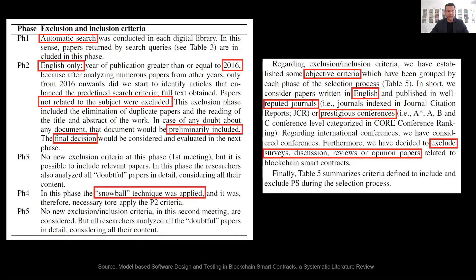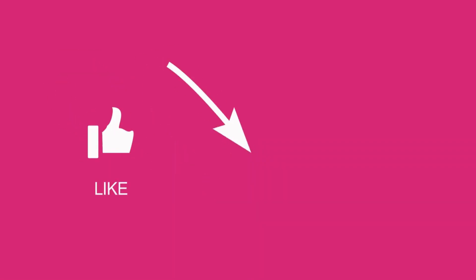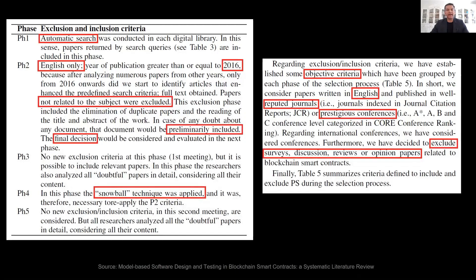This is an example where both inclusion and exclusion criteria are explained in the same paragraph. In other papers, you will see a table with inclusion criteria on one side and exclusion criteria on the other. In computer science, they also reference the CORE conference ranking list, categorizing papers into A*, A, B, and C — selecting prestigious conferences accordingly.